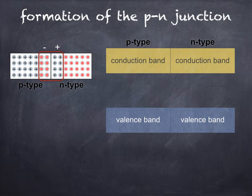Now, let's turn our attention to the diagram on the right. Here we can see the energy band model of P-type semiconductor, where conduction is due to the motion of positive holes within the valence band, and N-type semiconductor, where conduction is due to the motion of negative electrons within the conduction band. When a P-N junction is formed, the energy bands warp like so.